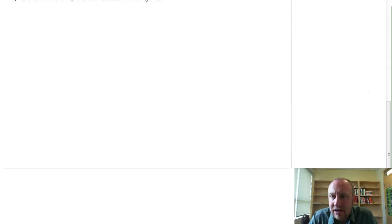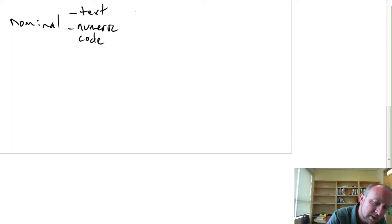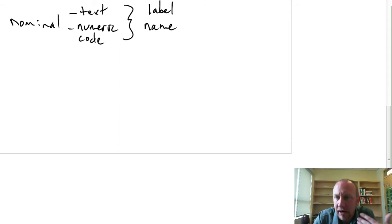So the most basic kind of variable, the one that contains really the least amount of information, is what we call a nominal variable. So a nominal variable, it can be text, it can be a numeric code, and it provides really nothing more than a label. It can be a label, or it can be a name of something. So for example, your name, my name, can be a nominal variable.